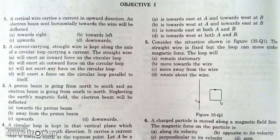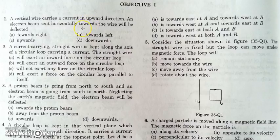Hello friends, in this video we will be covering H.C. Verma's Objective 1 for Magnetic Effect of Current. The first question is: there is a vertical wire in which current is flowing in upward direction and an electron beam is sent horizontally towards the wire. In what manner will it be deflected?